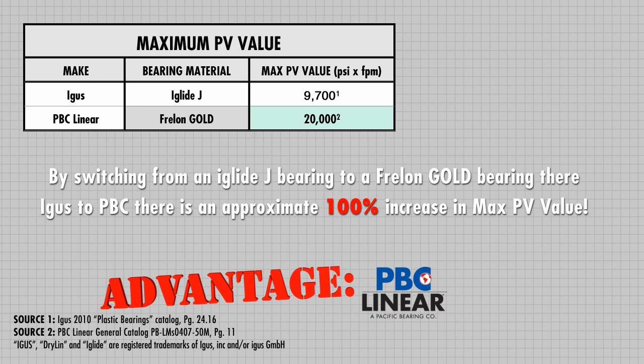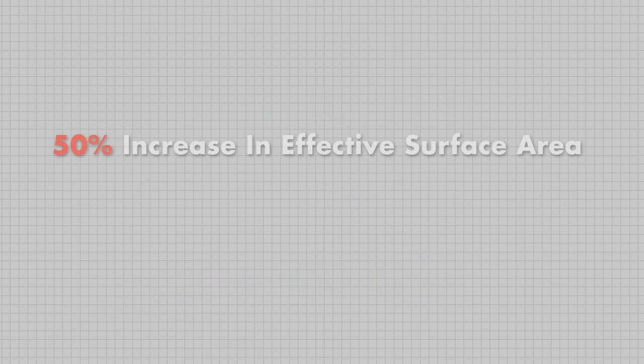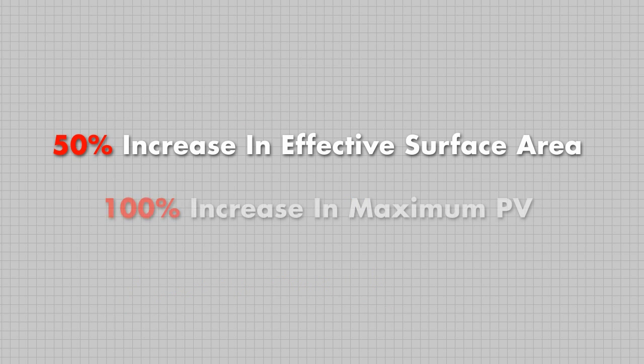By switching from an iglide J bearing to a Freeland Gold bearing, there is an approximate 100% increase in maximum PV value. We've now seen that there is a 50% increase in effective surface area and a 100% increase in maximum PV — but what does that mean for an actual application?